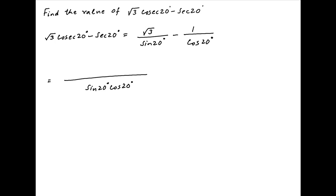Taking a common denominator, we get sin 20 degrees times cos 20 degrees in the denominator, and the numerator is root 3 times cos of 20 degrees minus sin of 20 degrees.